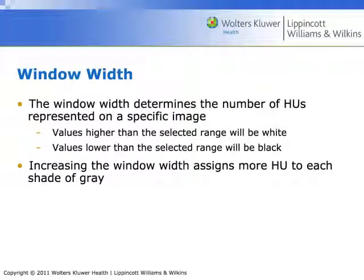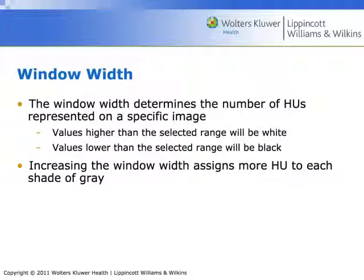Window width determines the number of Hounsfield units illustrated on a specific image. Any value higher than the width of the window will be white — completely whited out. On the lung windows we were looking at earlier, the higher values like the heart or the spine are just completely whited out. Anything lower than the selected range will be completely black. On the soft tissue window levels, the lungs were significantly less than the width of the window, so they were just completely blacked out. Increasing the window width assigns more Hounsfield units to each shade of gray — we've only got 256 the computer can display and only 40 the eye can actually see.